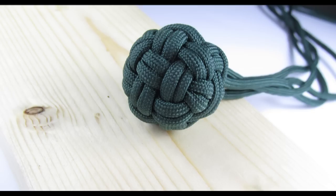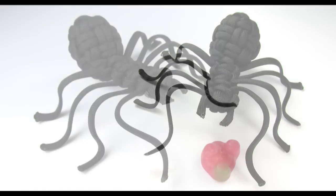I've recently used the globe knot to make a paracord tarantula. I've used it to make the back of the spider.